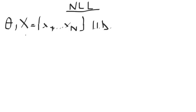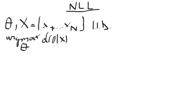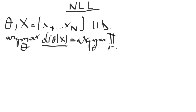What we like to do with these terms is find the parameters theta that maximize the likelihood function over our data using the parameters theta. We can take advantage of the fact that the data is iid and rewrite the likelihood term as the argmax over theta of the product from i equals 1 to n of the probability of each individual sample, p of xi given theta.